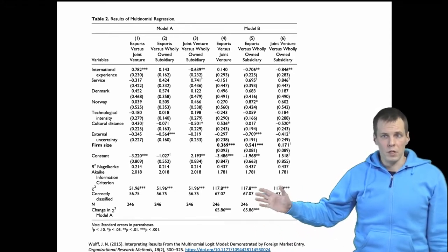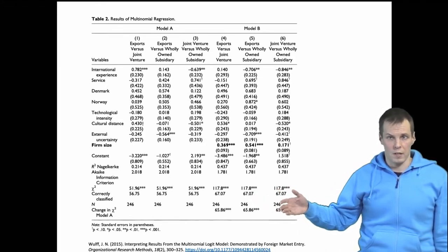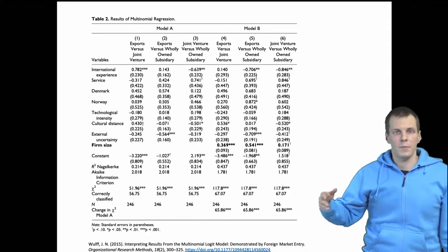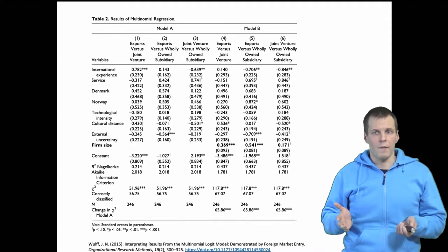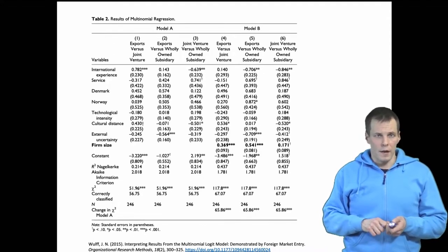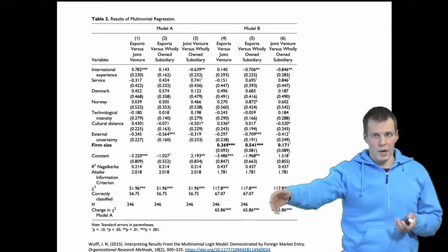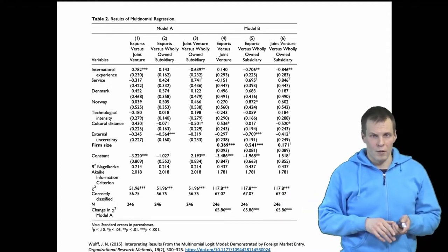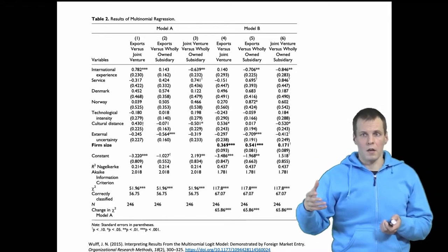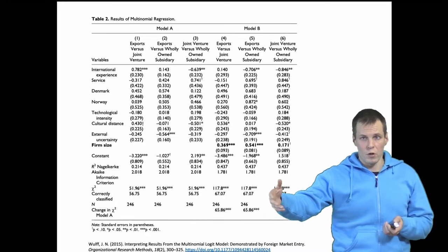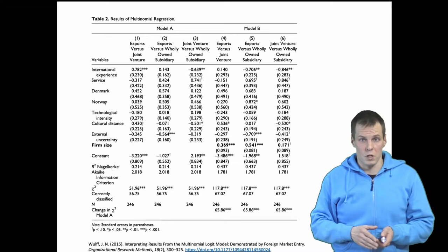The question this paper asks as a demonstration is how companies choose their internationalization mode. You can expand internationally in multiple different ways, and they have three different ways. One is exports. Another is joint venture, which means that you start a company with somebody else that is already in the market. And then there is the subsidiary - you start a new subsidiary that you own yourself in the foreign market. Which of these modes the company chooses is the research question.